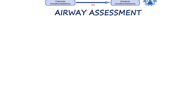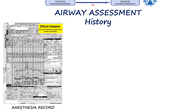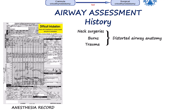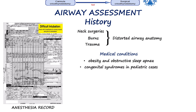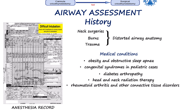We go through the patient's notes and anesthesia records to check if there has ever been any difficulty with intubation or mask ventilation in the past. We also ask about neck surgeries, burns, or trauma that might have altered the airway anatomy. Concurrent conditions to consider include obesity and obstructive sleep apnea, congenital syndromes in pediatric cases, diabetes arthropathy, head and neck radiation therapy, and rheumatoid arthritis and other connective tissue disorders. We always check the timing of the last meal because a full stomach increases the risk during airway management.